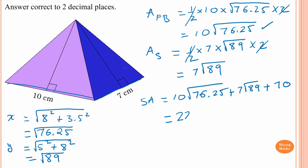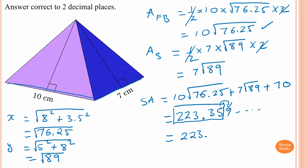Putting that into the calculator gives 223.359... Correct to two decimal places, the digit after is 9, which is greater than five, so we round up — the answer is 223.36 square centimeters.